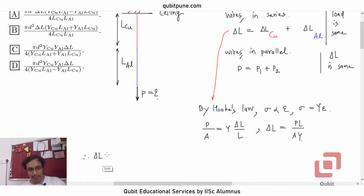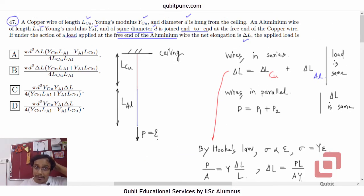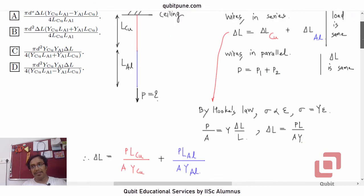Now, we can say that the total elongation is elongation in the copper wire plus elongation in the aluminum wire. So, the elongation in the copper wire is P L_Cu upon A Y_Cu plus the elongation in the aluminum wire, same P, P L_Al upon A into Y_Al. Now, why are we not taking the areas different? Because they say that both the wires have the same diameter, so they must have the same cross-sectional area.